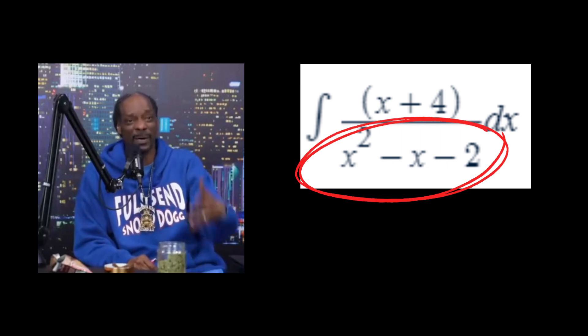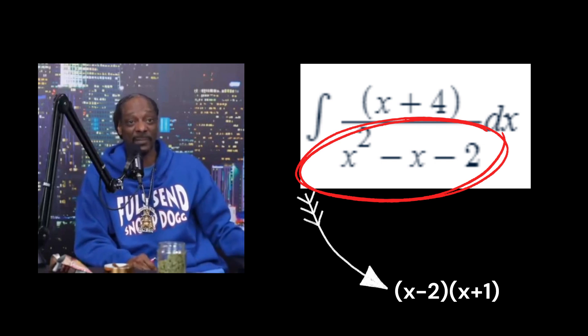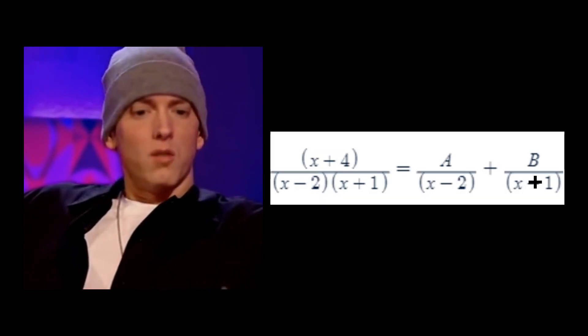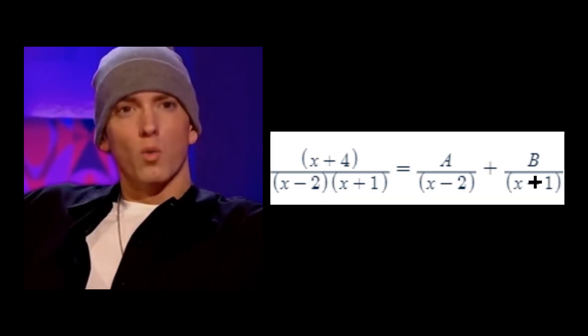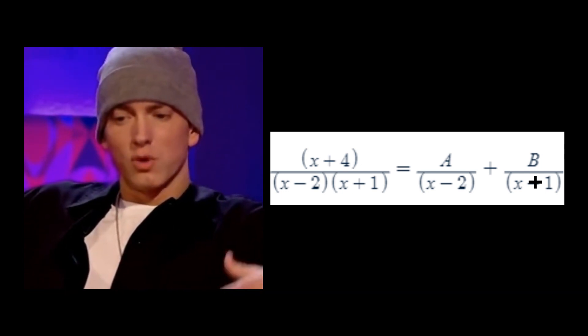Looking at the denominator, we can factor it, giving us two factors of the first degree. Now, if only we had a way to separate them into a sum of fractions. I remember learning partial fraction decomposition. So we can separate this big fraction into the sum of two others, like so. The numerators are not known yet, so I'm going to call one A and the other B.